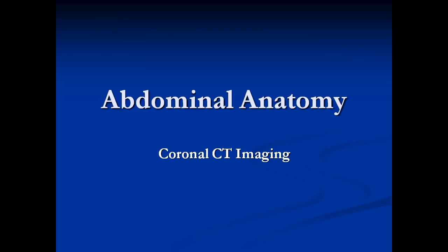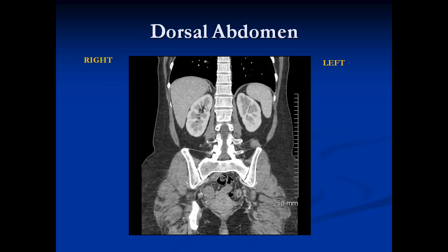If we turn the study around and do what we call coronal imaging, it gets a little easier to see what we want. Most CT scans nowadays are 16 or 64 slice and can easily recreate images in coronal or sagittal format. Going to the very back of the abdomen and looking at the retroperitoneum, we can see both kidneys surrounded by fat. It's very important to remember that because that fat allows us to see these structures on a plain film of the abdomen as well.